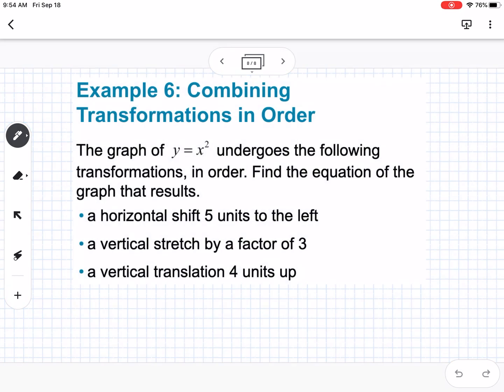Okay, last example, combining transformations in order. So it says the graph of y equals x squared undergoes the following transformations in order. Find the equation of the graph that results. So a horizontal shift, 5 units to the left. So this is going to be y equals, so we have 5 units to the left, so it's going to be x plus 5 squared. And then it says a vertical stretch by a factor of 3, so that would be 3x plus 5 squared. And then a vertical translation 4 units up, so it would be plus 4. Okay, so that's just combining all of these transformations together. Okay, so let me know if you have any questions.